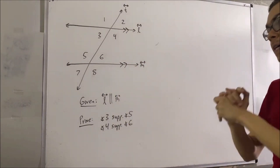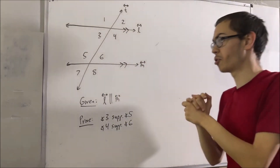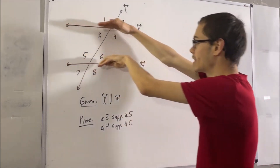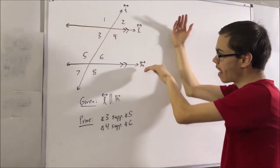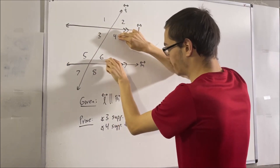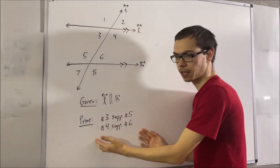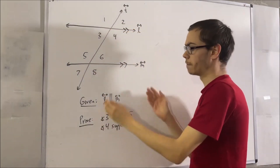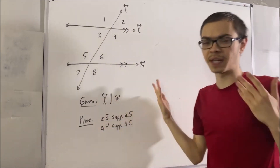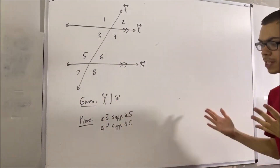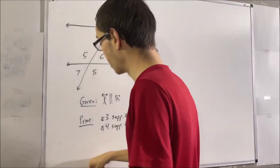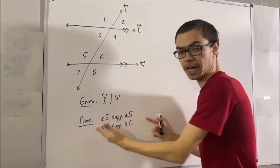The whole idea of the same-side interior angles theorem says that if these two lines are parallel, then these two pairs of angles must be supplementary. If the lines are parallel, then the pairs of same-side interior angles must be supplementary — their measures must add to 180 degrees. Our goal in this video is to prove that.